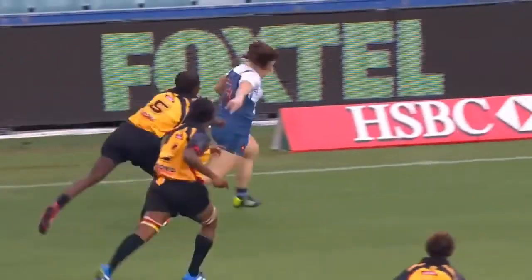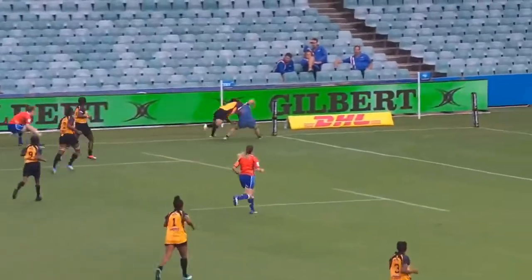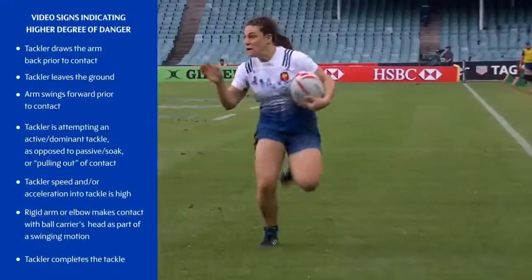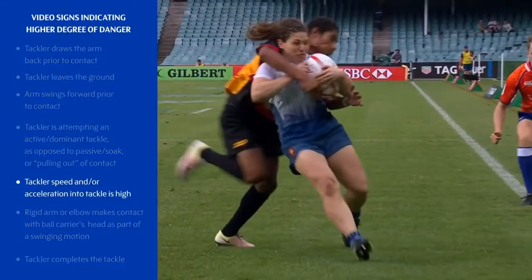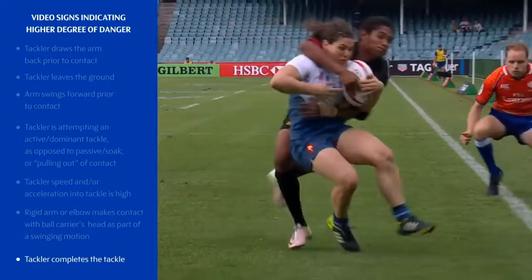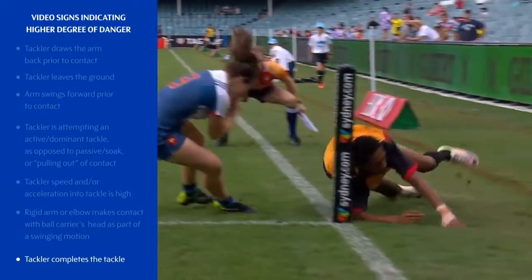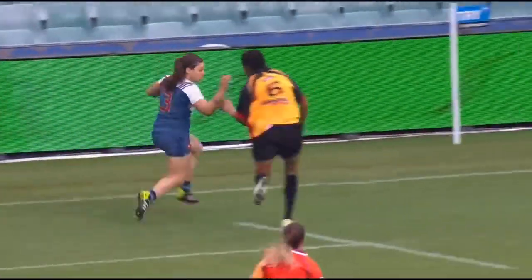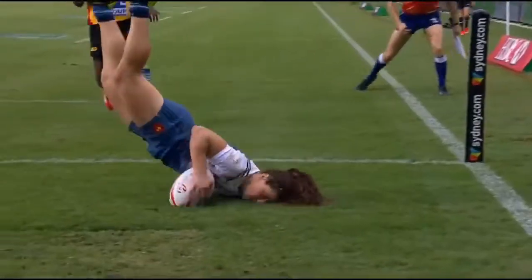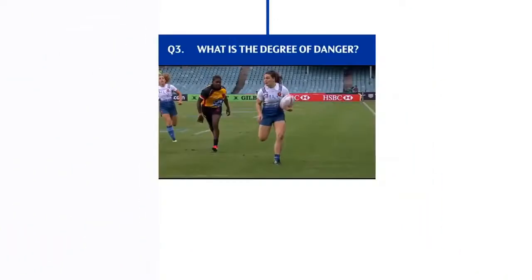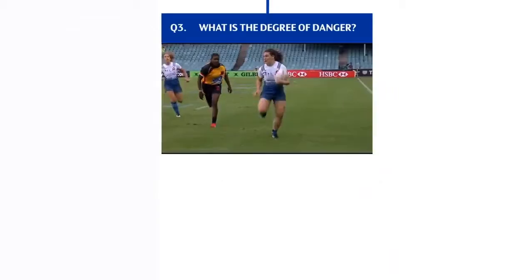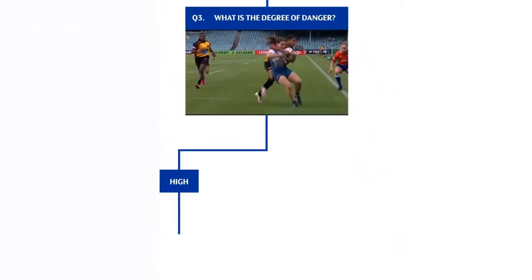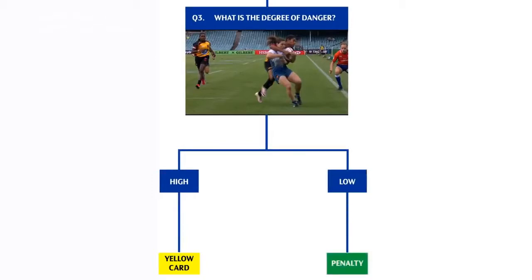In this example, the degree of danger is high, indicated by a tackler who runs into contact at high speed and completes the tackle by following through over the top of the ball carrier. Because the tackler's head contact was indirect - moving up after initial contact lower on the tackled player's body - the initial decision for a high degree of danger is a yellow card. In tackles where the degree of danger is low, the initial decision would be a penalty.